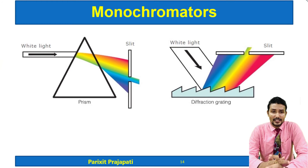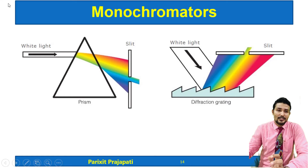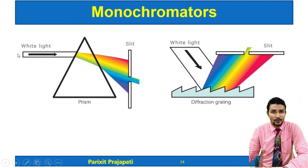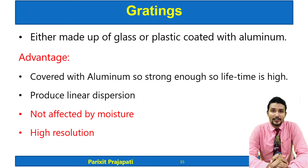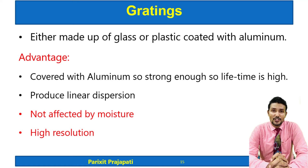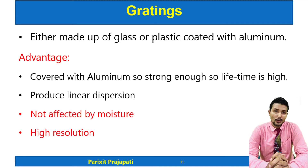Here is the diagram of prism and grating. A prism is familiar from UV-visible spectrophotometry. Gratings are based on diffraction or reflection, and have different grooves. The advantage of gratings is that they are made of glass or plastic coated with aluminum, giving them a high lifetime and greater strength. Gratings produce linear dispersion and have higher resolution than prisms. They are also not much affected by moisture.